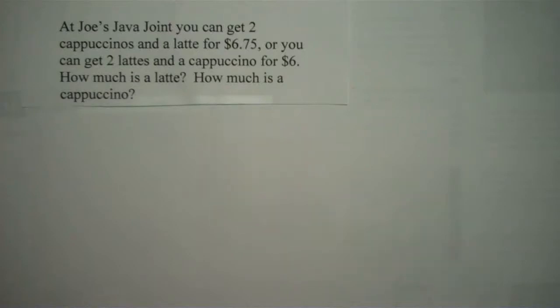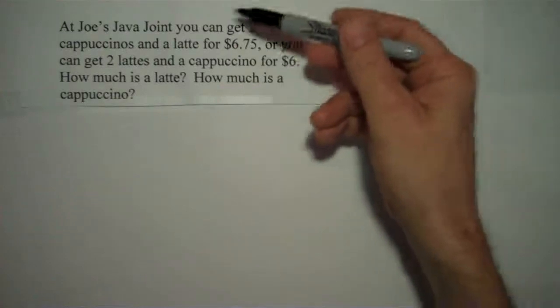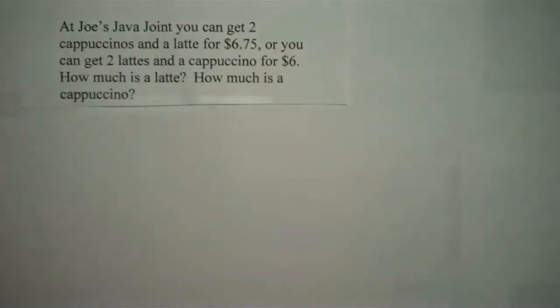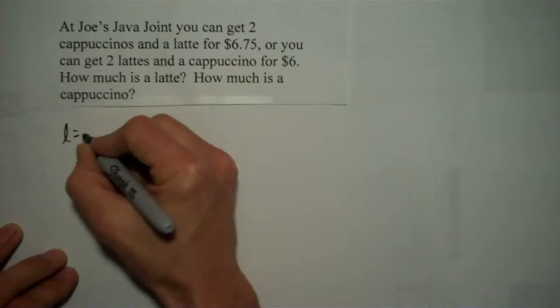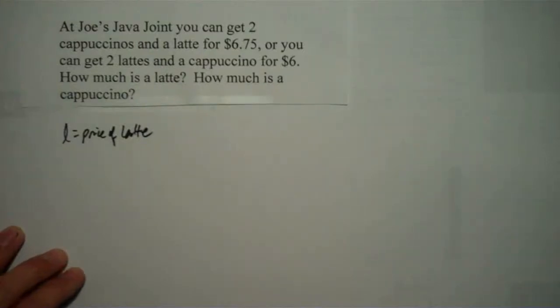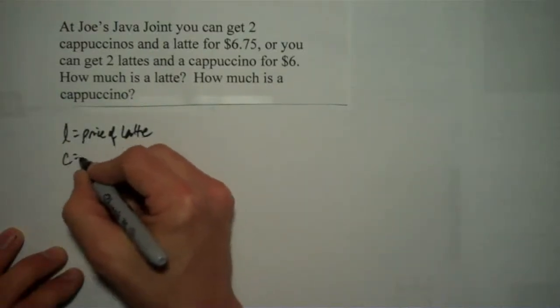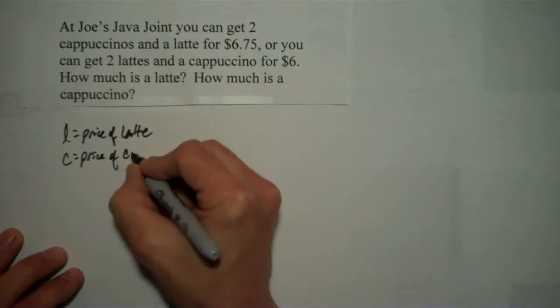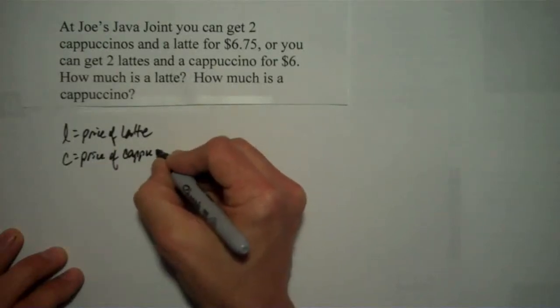Okay, so when we're solving problems like these, really what we have to do is we have to turn this paragraph into some math. And so we have to translate from English to math. Okay, so step one of that is to figure out what are our unknowns. Well, how much is a latte? I'd say one unknown is going to be L, the price of a latte. Another unknown, C, the price of a cappuccino.